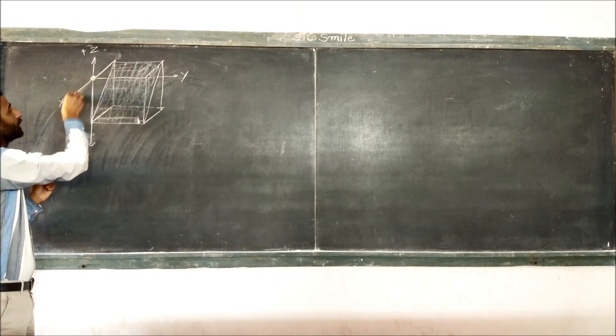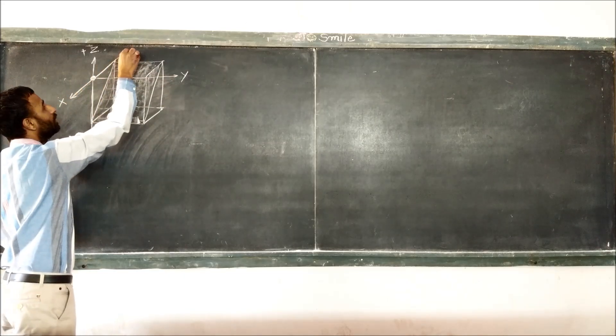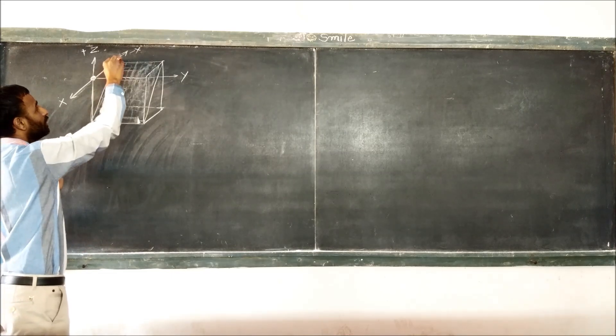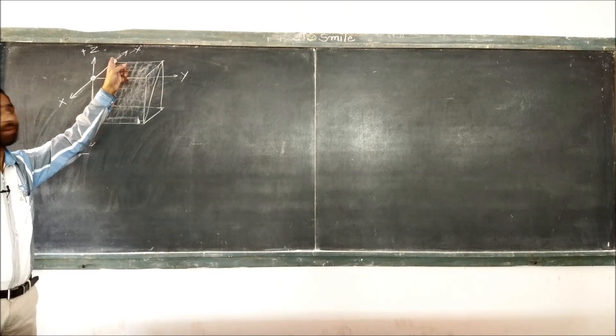From this point, this is x-axis, positive x, and this one is minus x. That means, it cut x-axis even at minus 1.